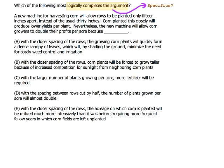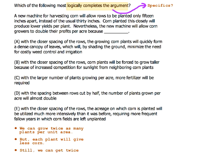We can grow twice as many plants per unit area, because we can plant them at half the usual spacing. But each plant will give less corn. So we can get twice the profits per unit area.